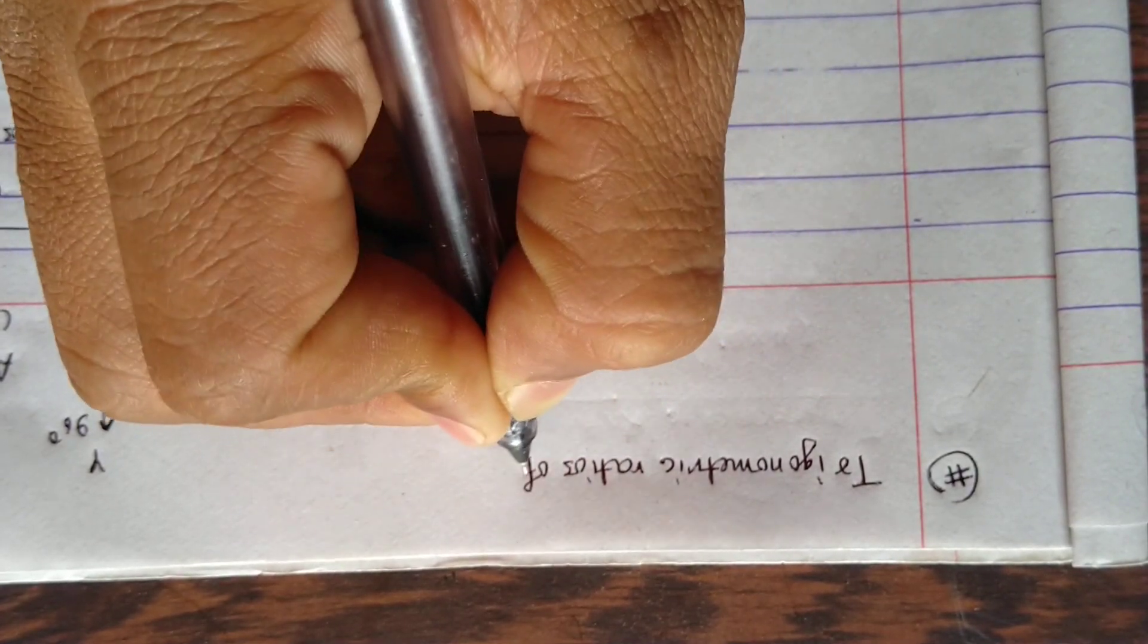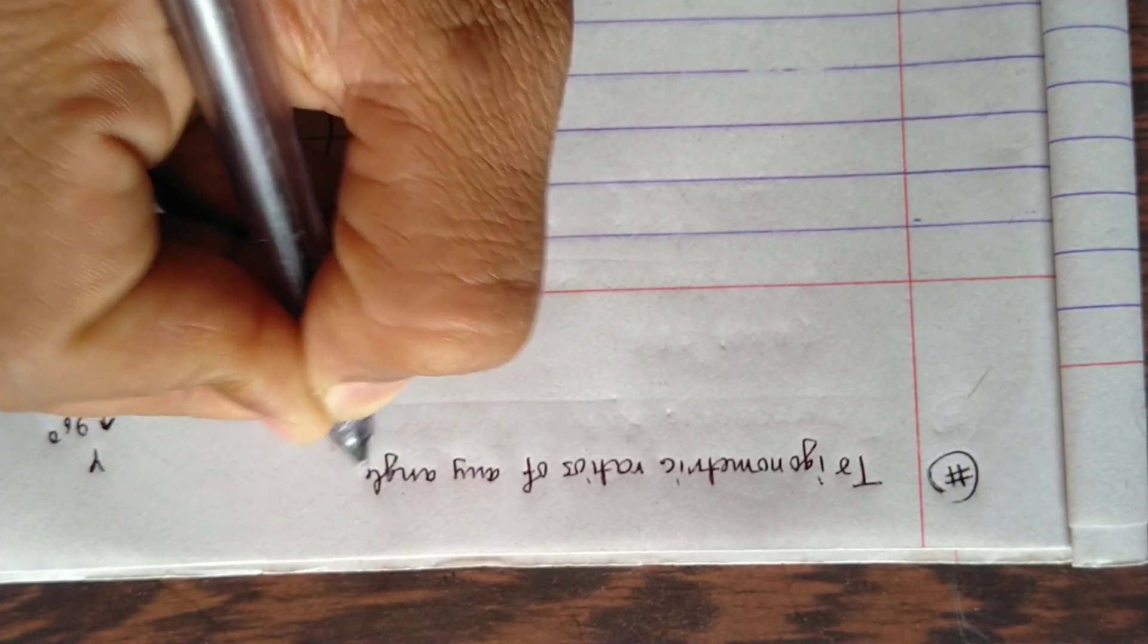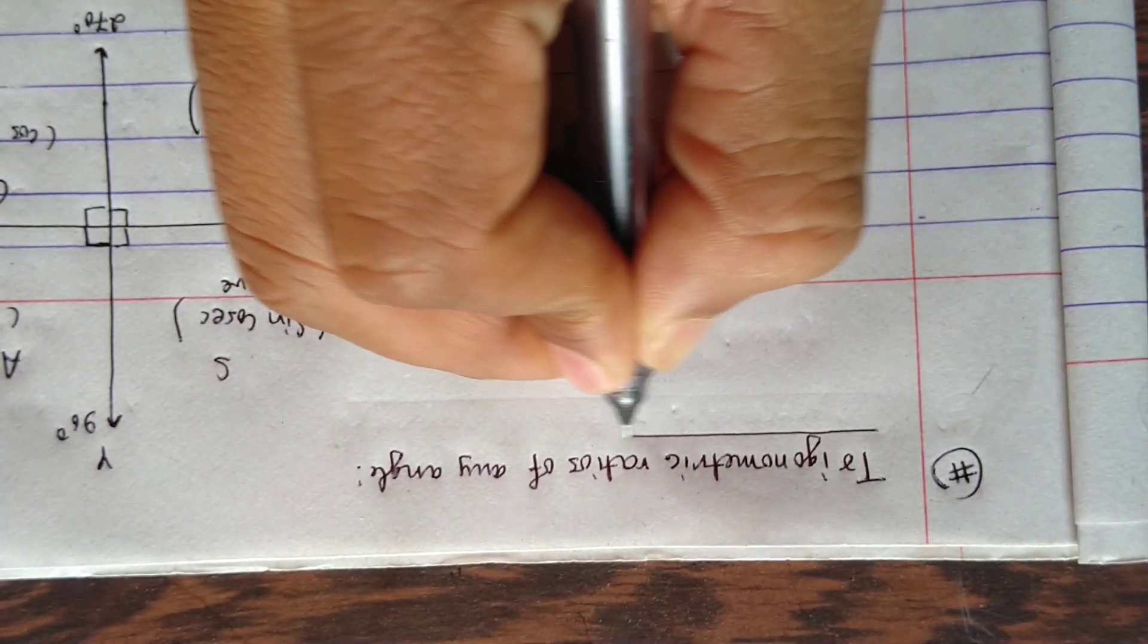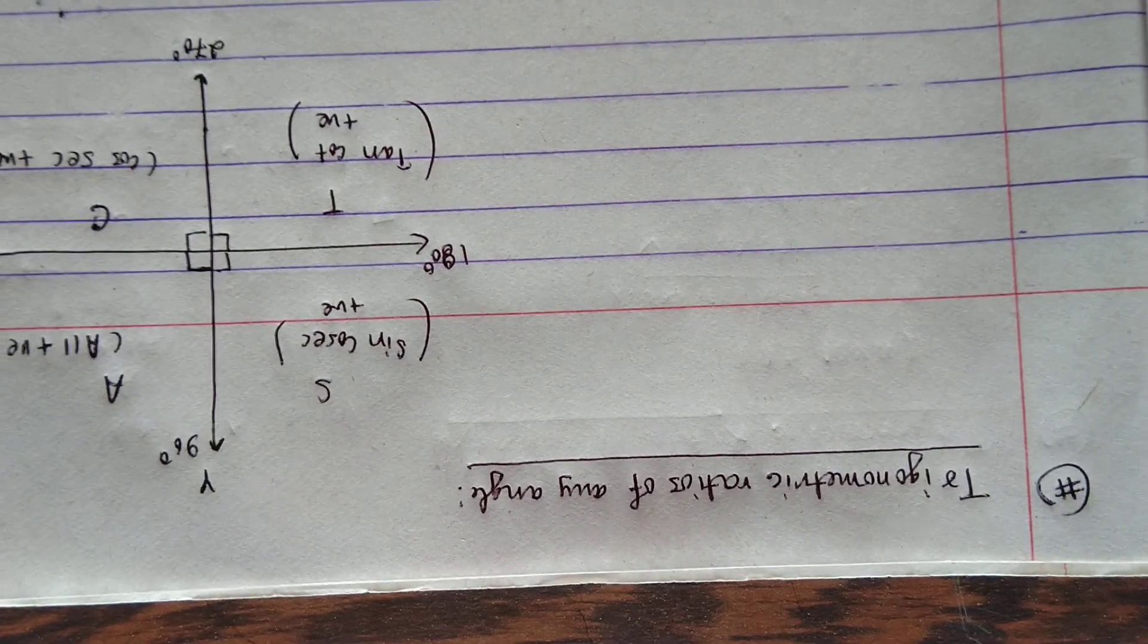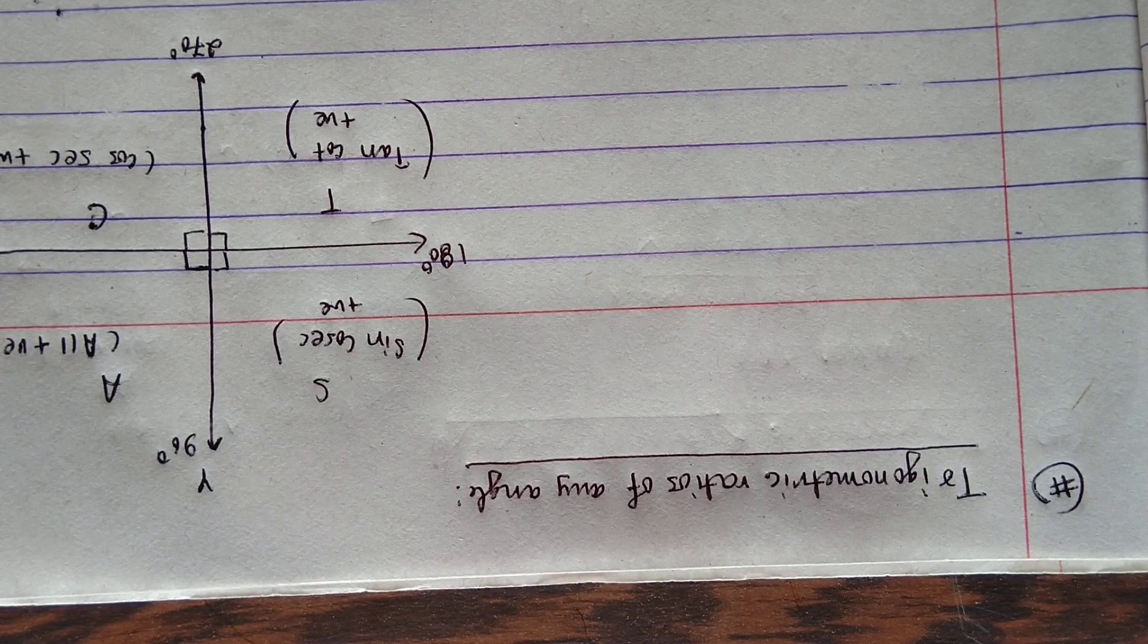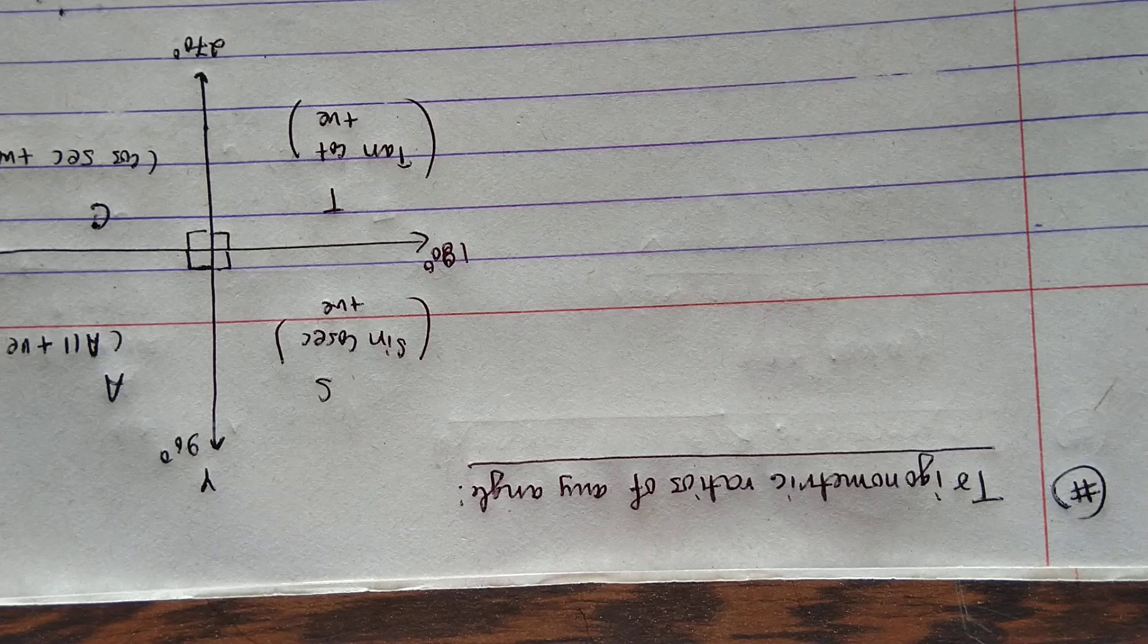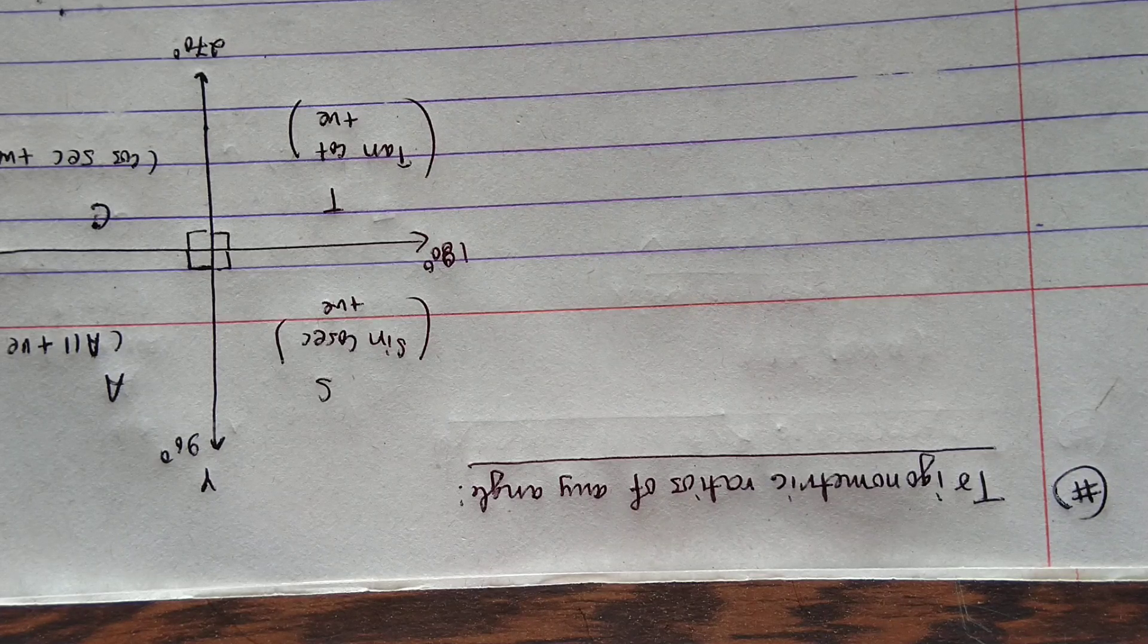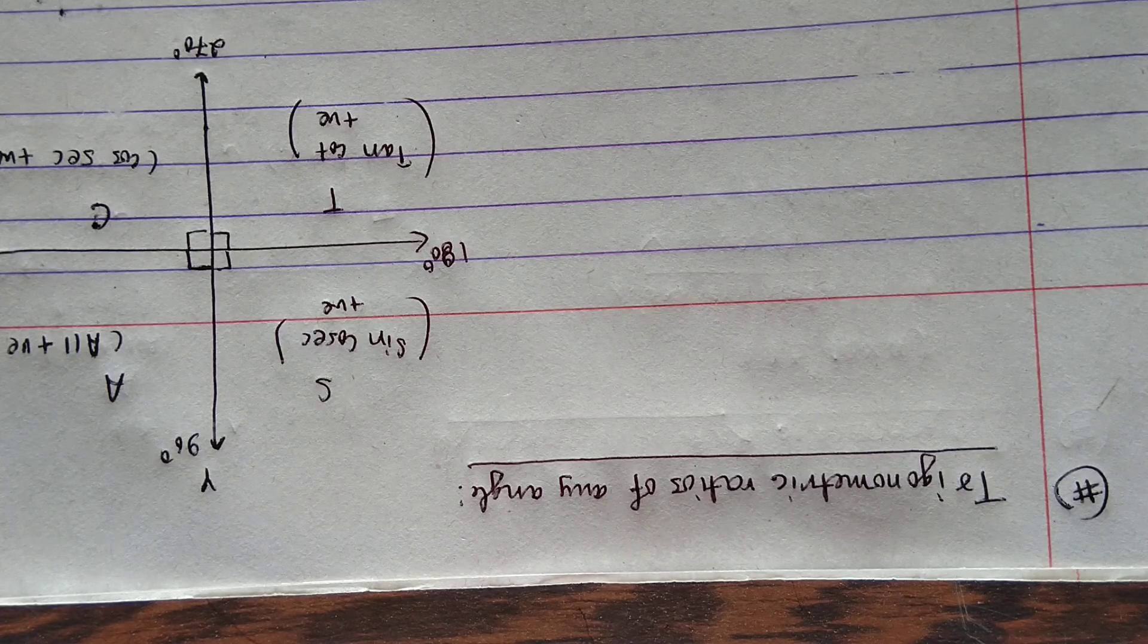We should understand trigonometric ratios of any angle. There are six trigonometric ratios: sine, cos, tan, cot, cosec, and sec.